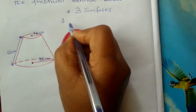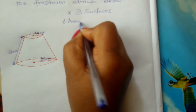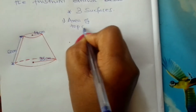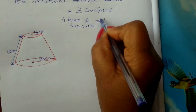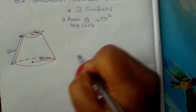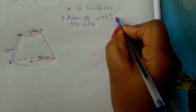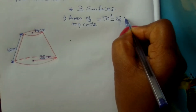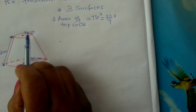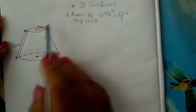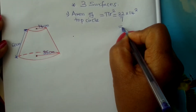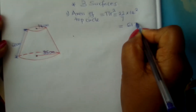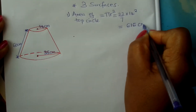Number one: what is the area of the top circle? The area of a circle is given by π r². Therefore this will be 22/7 times 14 squared. You work out using a calculator and you should get 616 centimeters squared. That is the area of the top circle.